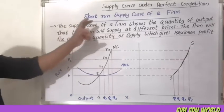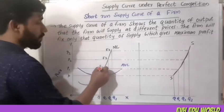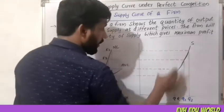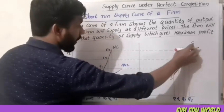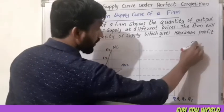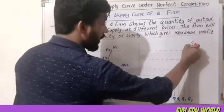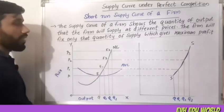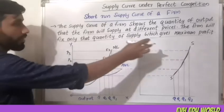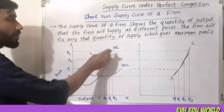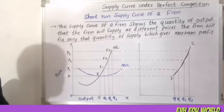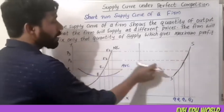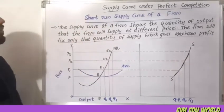What we are talking about is the short-run supply curve. The equilibrium points E1, E2, E3 — when we mark these equilibrium points and connect them, we get the supply curve. The cost at each equilibrium point corresponds to the marginal cost, and the resulting curve is the short-run supply curve.